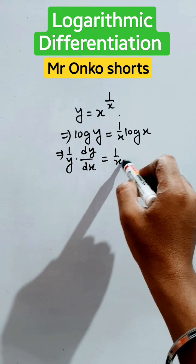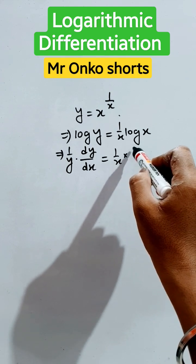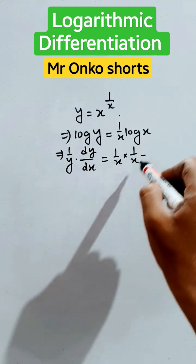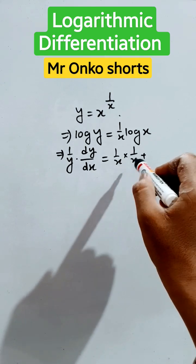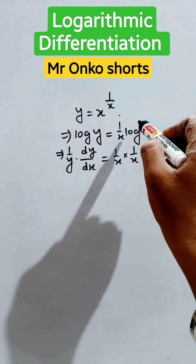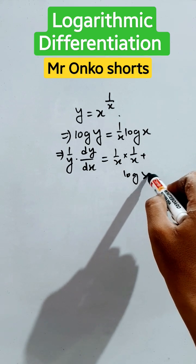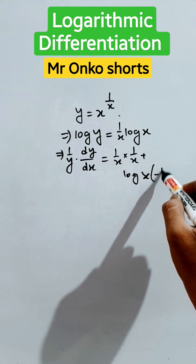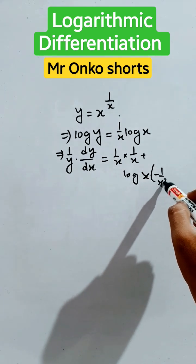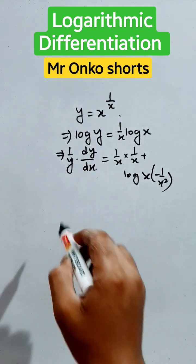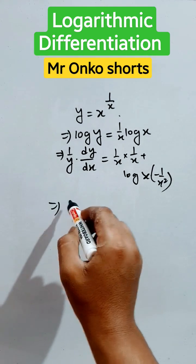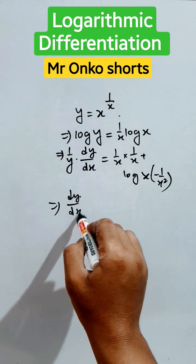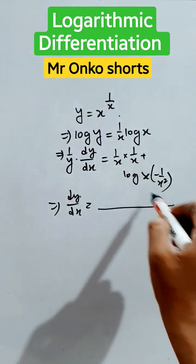That is 1 by x into log x, plus log x into 1 by x — which simplifies. The 1 by x term will give minus 1 by x squared, and dy/dx will be expressed with 1 by x squared.